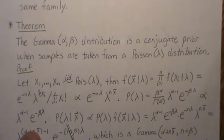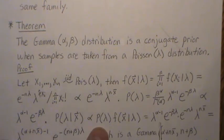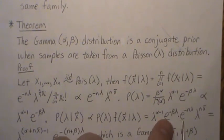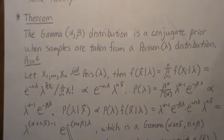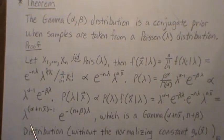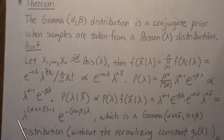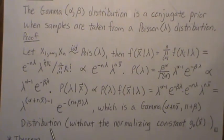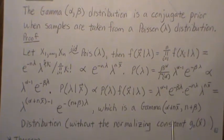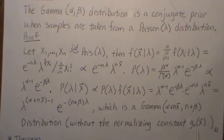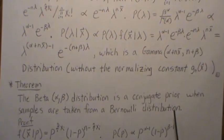The posterior distribution of lambda given our data is proportional to the prior times the likelihood. The first piece is the likelihood and the second piece is the prior. Combining the exponentials and the lambda terms, we get a form that matches a gamma distribution without the constants. So we say it follows a gamma distribution with alpha equal to the sum of X's plus alpha, and beta equal to n plus beta. This confirms the gamma is a conjugate prior for Poisson.